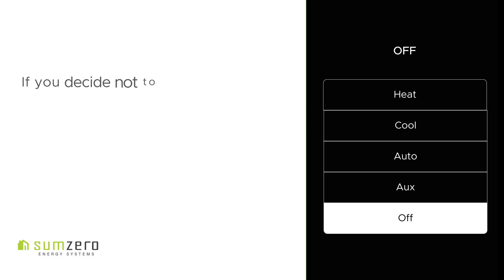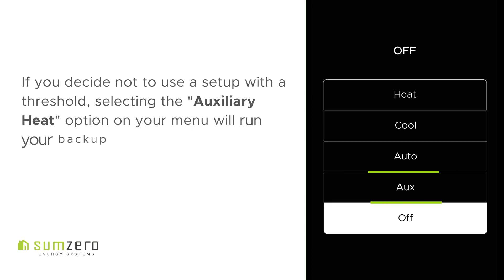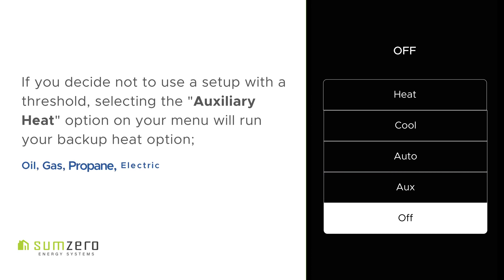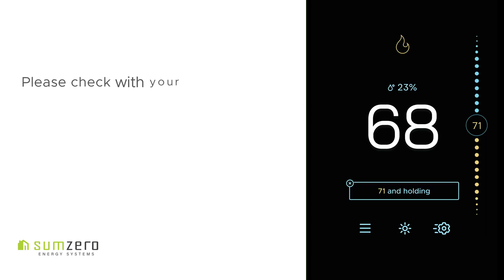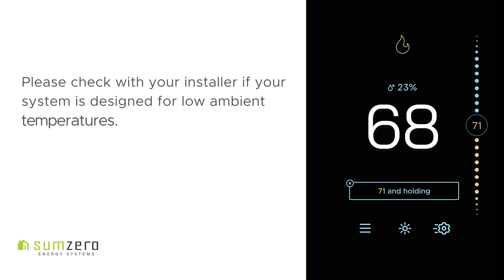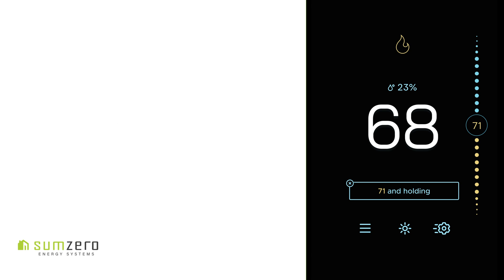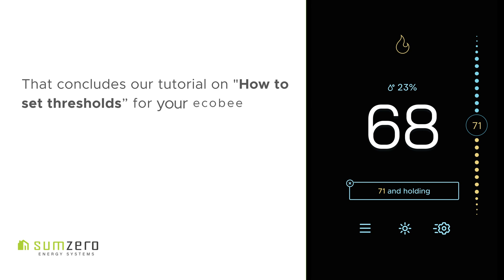If you decide not to use a setup with a threshold, selecting the Auxiliary Heat option on your menu will run your backup heat option. Please check with your installer if your system is designed for low ambient temperatures. And that concludes our tutorial on how to set thresholds for your Ecobee thermostat. Thanks for watching.